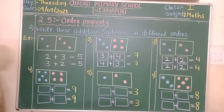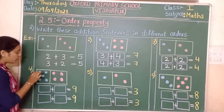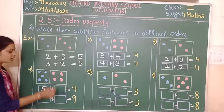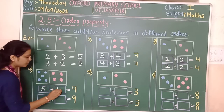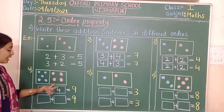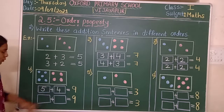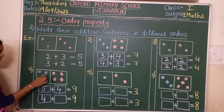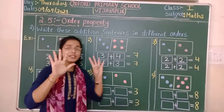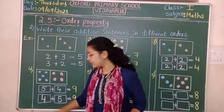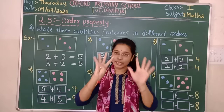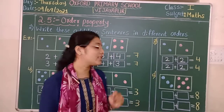Now count how many dots we have in the first box — five dots. And four dots in the second box. We have to interchange the addends: write the second as the first. Four is our first addend, five is our second addend. Five plus four gives us nine. Then four plus five also gives us nine. There will be no change in the sum.